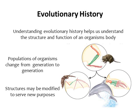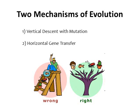In evolution, certain structures can be modified to serve new purposes. For example, we have a mammal forelimb — the arm of the mammal. This structure, which served for walking on land, has been modified in bats to serve for flight, and it's also been modified in dolphins to become flippers. These flippers allow the dolphins to move through the water.